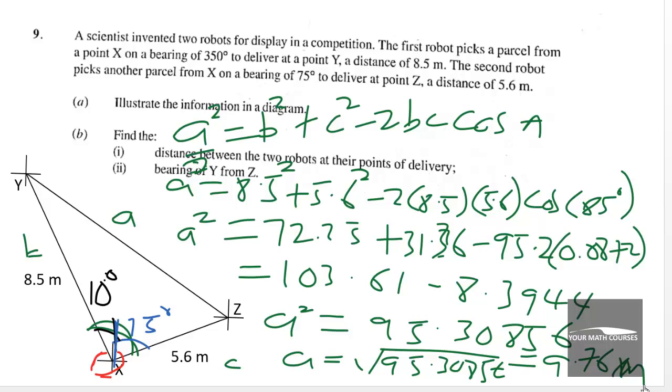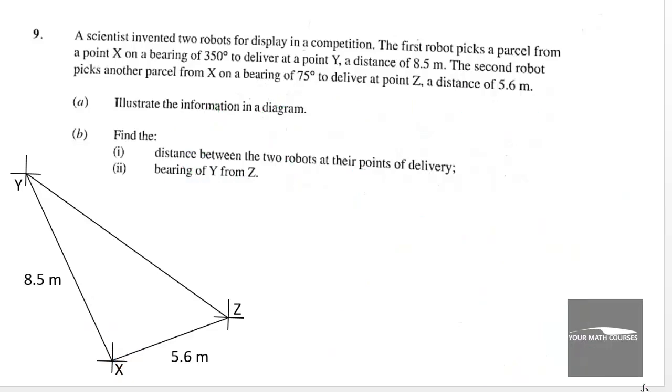Now what do we do next? So the distance between the two robots at their points of delivery is 9.76 meters and the next thing we are going to do is to find the bearing of Y from Z. So to do that...